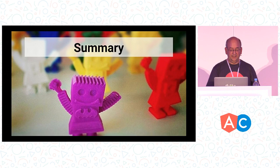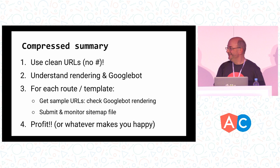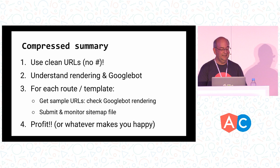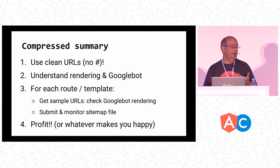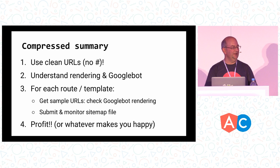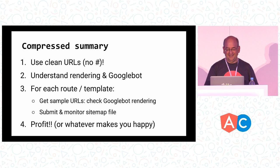A quick summary: URLs are the most critical part, especially for single-page apps and Angular apps. Make sure you're using clean URLs with no hashes. Understand how Googlebot does rendering and how you could do rendering on your site — maybe check out Universal to see how that works. For each route or template on your website, separate those out logically so you can recognize systematic issues faster. Then everything should fall into place and you won't have to worry about those bad headlines around JavaScript sites in search.